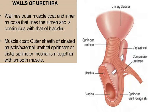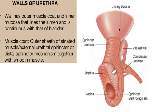Now, importantly, the walls of the urethra: the wall has an outer muscular coat and an inner mucosa lining the lumen, continuous with that of the urinary bladder. The muscle coat consists of an outer sheath of striated muscle — the external urethral sphincter or distal sphincter mechanism — together with smooth muscle.